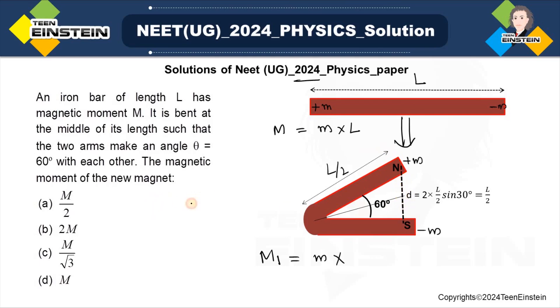then you know we have L by 2. Suppose this is D by 2, this is L by 2 and this is 30 degrees. Now if you just draw a perpendicular bisector, so this is D by 2 and this is D by 2.